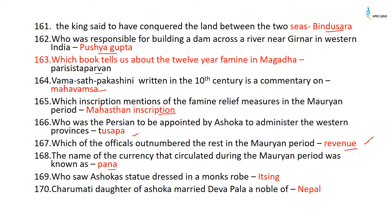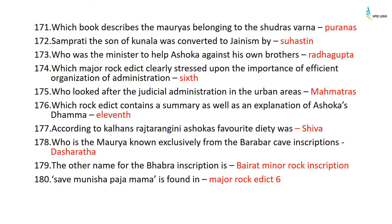Yijing saw Ashoka's statue dressed in a monk's robe. Charumati, daughter of Ashoka, married Devapala, a noble from Nepal. The Puranas describe the Mauryas as belonging to the Shudra varna. Samprati, the son of Kunala, was converted to Jainism by Suhasthin. Radha Gupta was the minister who helped Ashoka against his own brothers. Major Rock Edict 6 clearly stresses the importance of efficient organization of administration. The Mahamatras looked after judicial administration in urban areas.